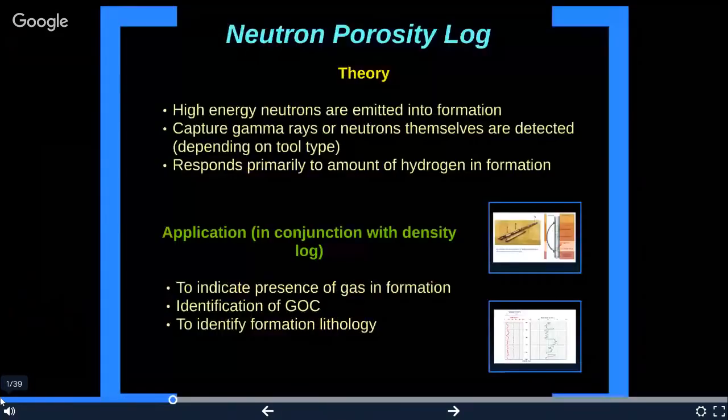Neutron porosity log: Neutron logs are used principally for delineation of porous formation and determination of porosity. They respond primarily to the amount of hydrogen in the formation. Thus, in clean formation whose pores are filled with water or oil, the neutron log reflects the amount of liquid filled porosity. Gas zones can often be identified by comparing the neutron log with another porosity log.